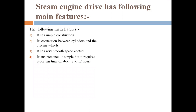It connects between the cylinder and driving wheel, and it has very smooth speed control. Maintenance is very simple. However, the efficiency is only 8 to 10 percent — that is a very big disadvantage. That means out of 100 percent coal burned, we will only have 8 to 10 percent mechanical energy available.